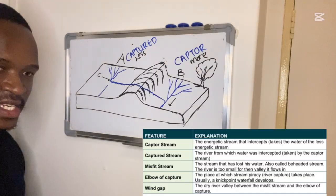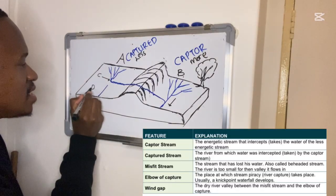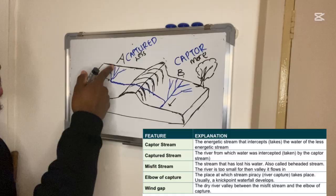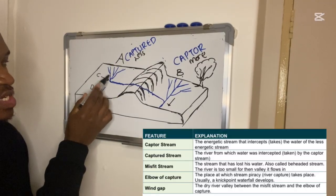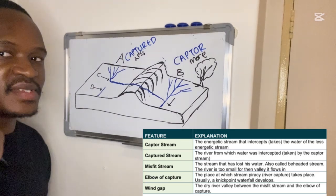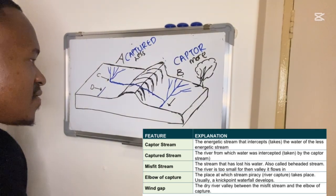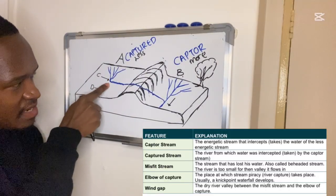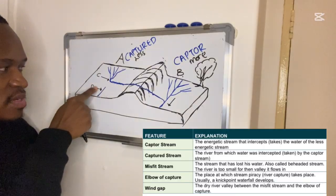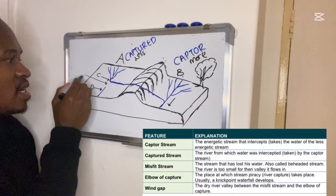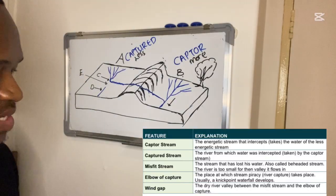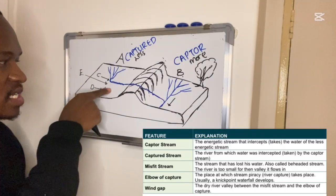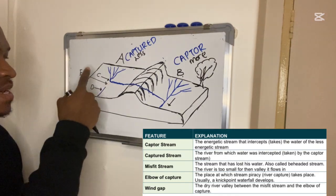Below the elbow of capture, the stream no longer has its original source — this is called the misfit stream, labeled D, also known as the beheaded stream, because it has lost its headwaters. The dry valley between the elbow of capture and the misfit stream is known as the dry gap or wind gap, labeled E.